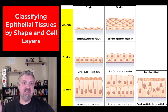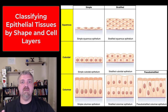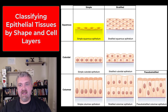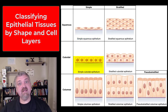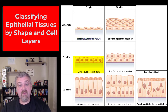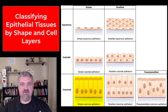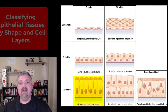On the left-hand side we see squamous, cuboidal, and columnar. On the top we see simple and stratified. Squamous cells look like fried eggs, so they're just going to be flattened round cells. Cuboidal cells, like the name implies, are going to be shaped like a cube. And columnar cells, also like the name implies, are going to be long columns or rectangles.